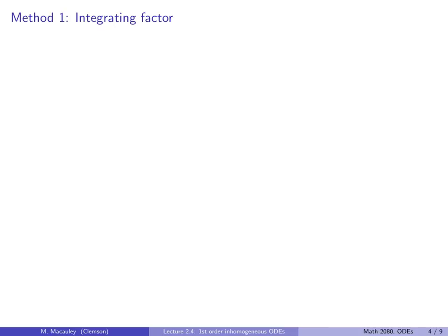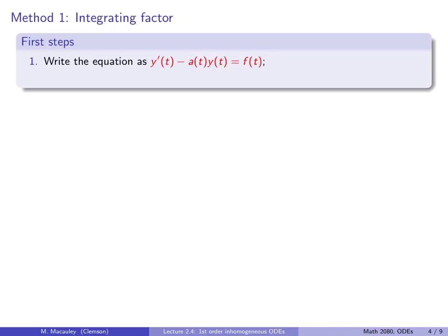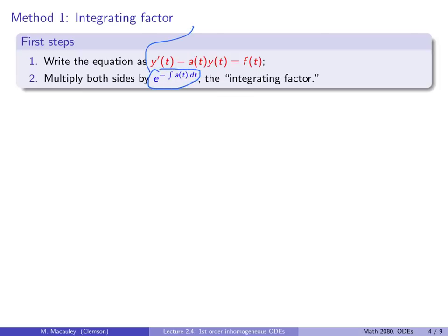The first few steps: first, write our equation in standard form — that is, make sure y' is monic and move the ay term to the left-hand side. Then multiply both sides by the integrating factor e^(−A(t)), where A(t) is the antiderivative of a(t). This is called the integrating factor. Let's see why this works.